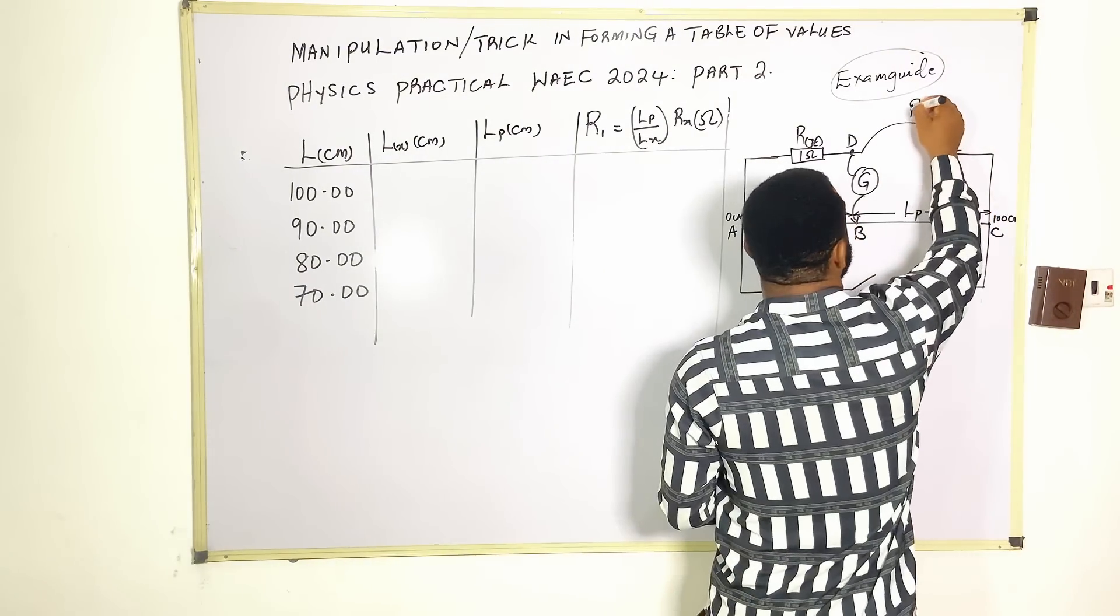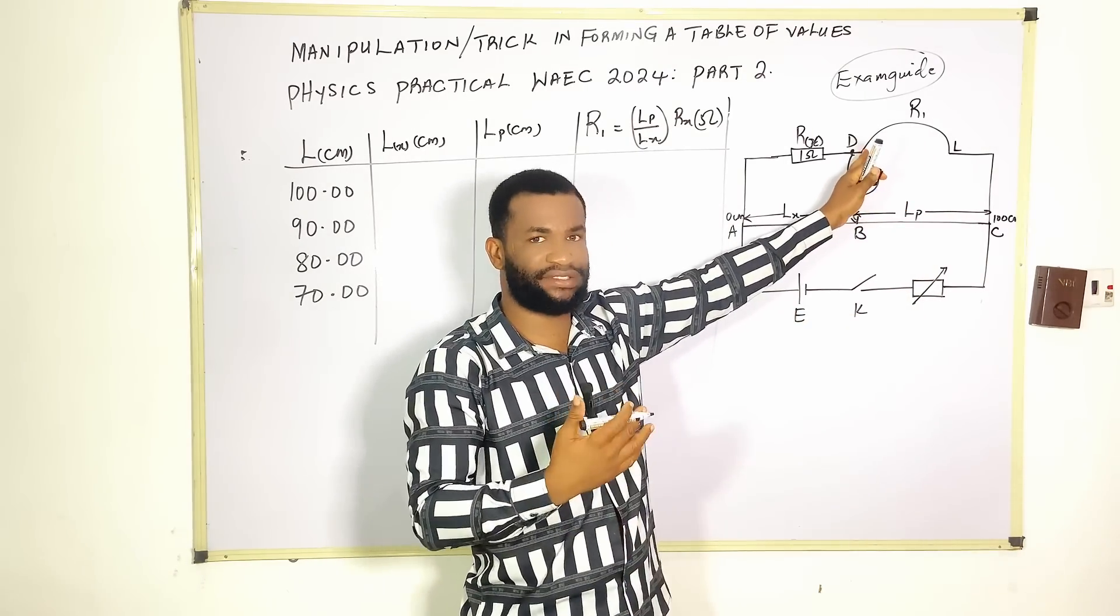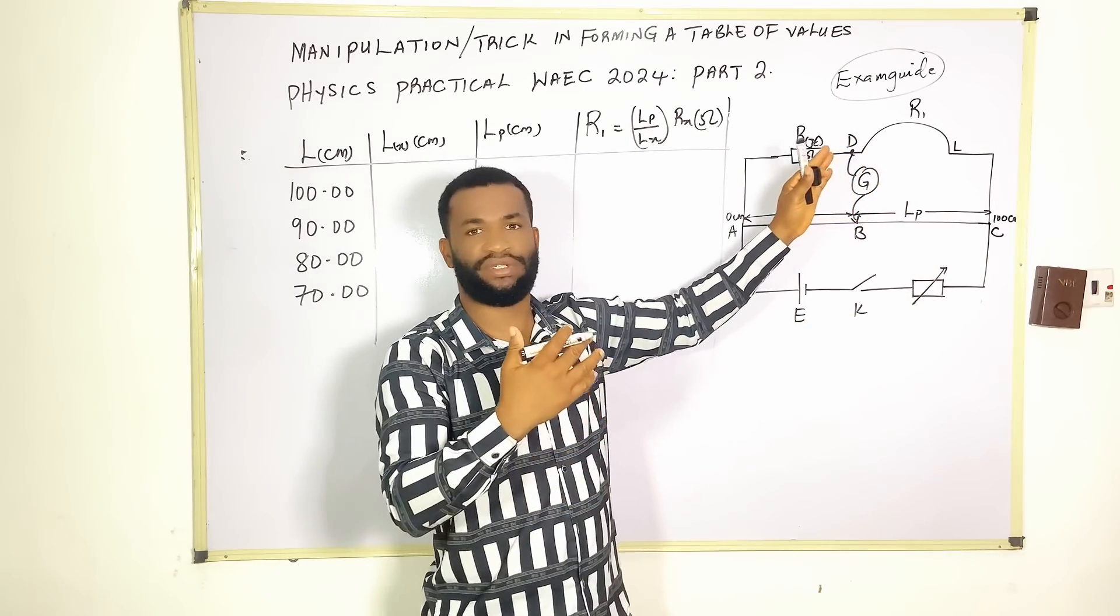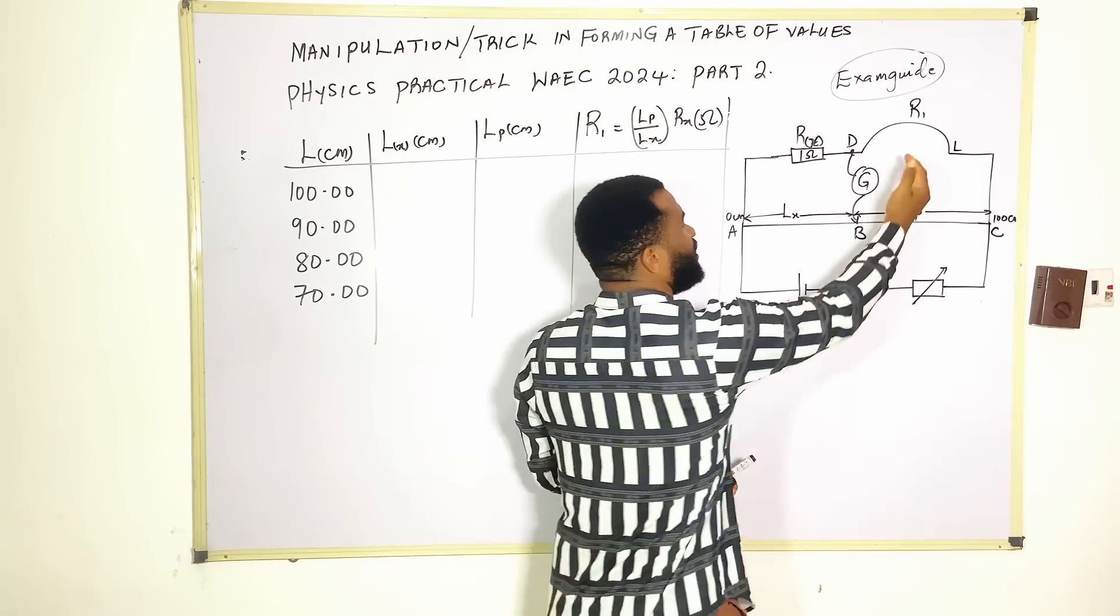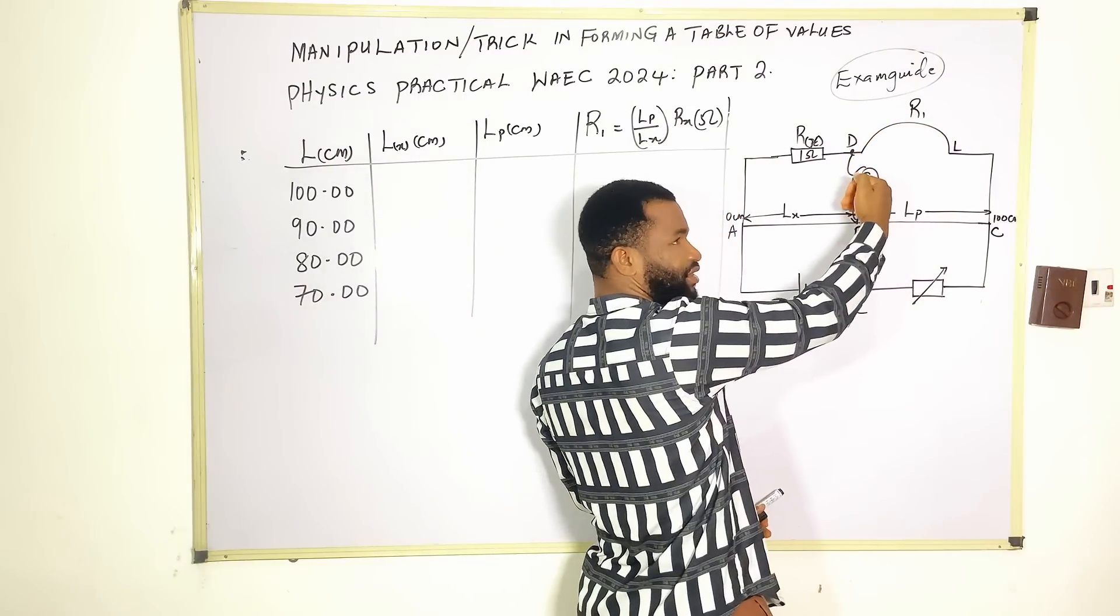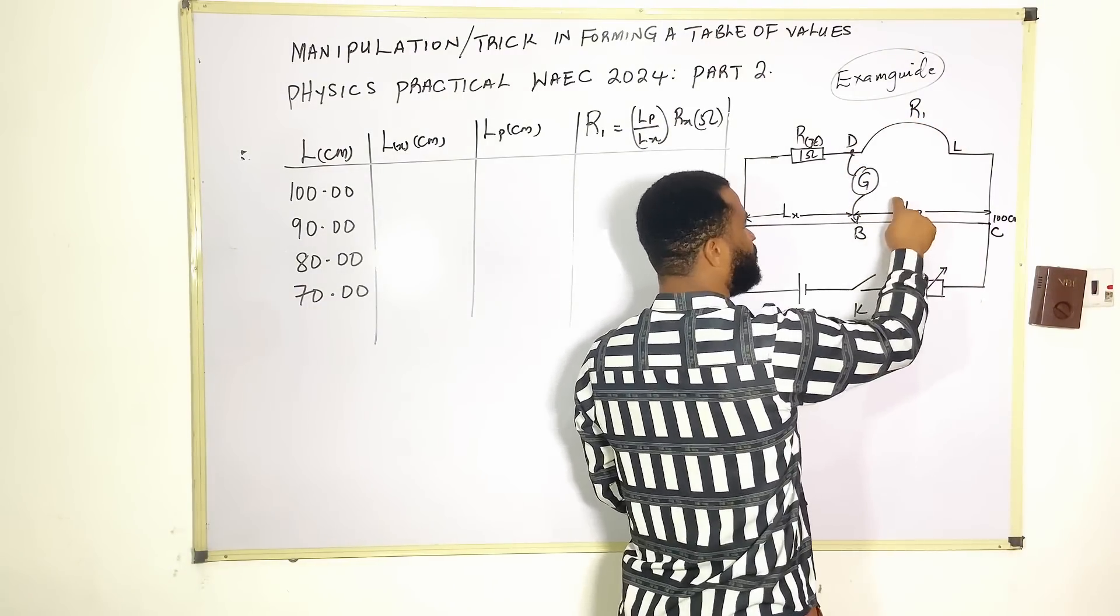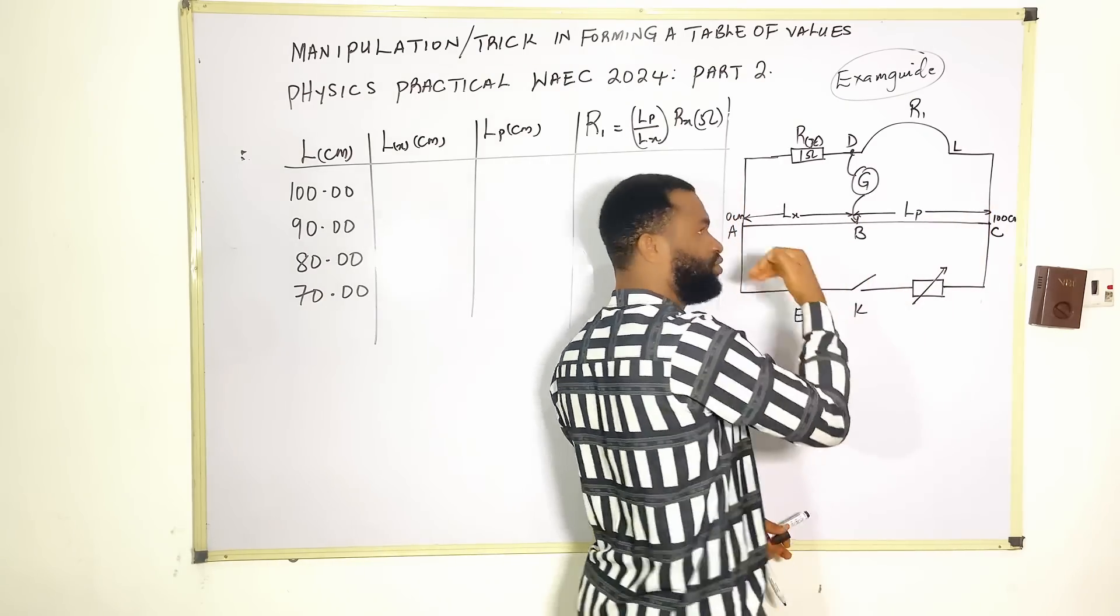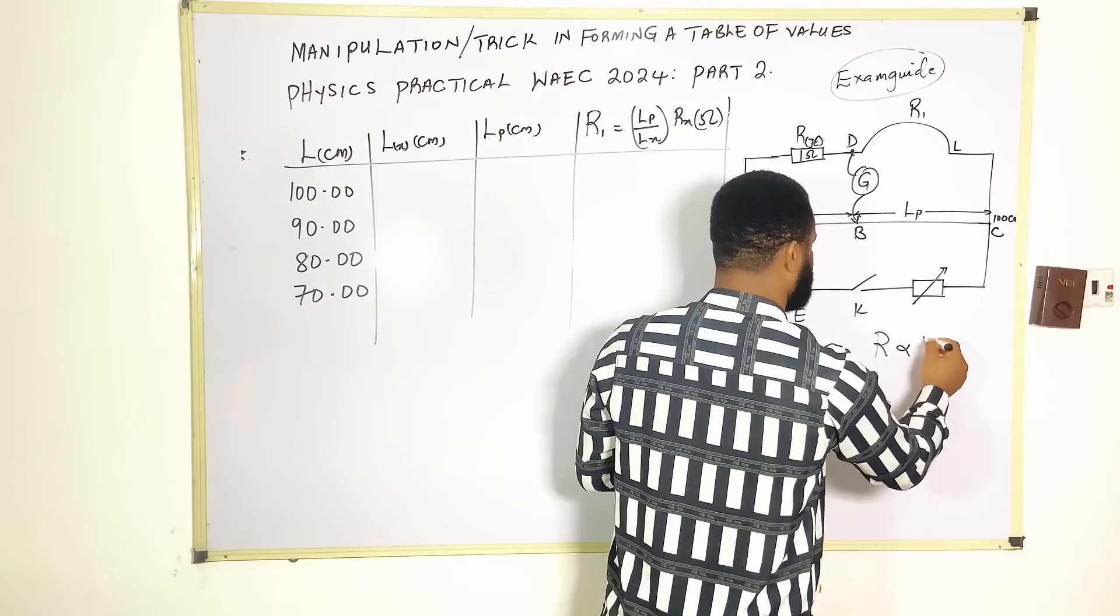This is where we are going to be changing the length: 100, we go to 90, we go to 80, we go to 70. For that reason, because the resistance is reducing—the length of the wire, which is also a resistance, is reducing—the value of lp must reduce.